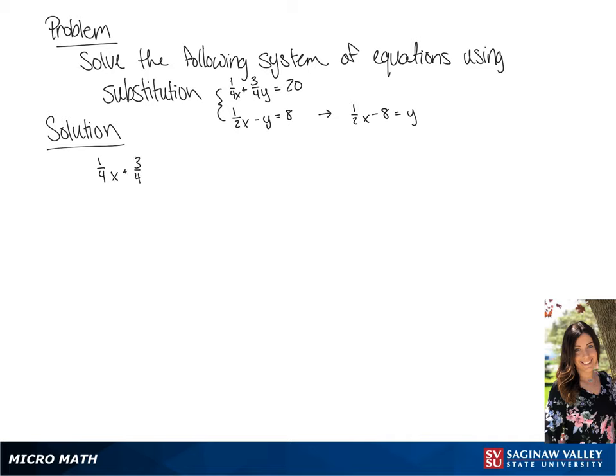This gives us 1 fourth x plus 3 fourths times 1 half x minus 8 equals 20. If we multiply that out, we get 1 over 4x plus 3 over 8x minus 6 equals 20.